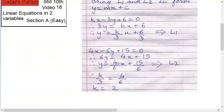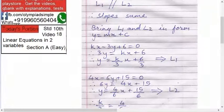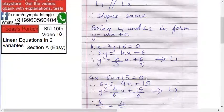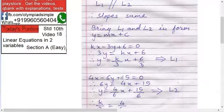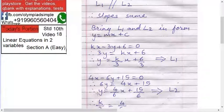Now the other line, 4x minus 6y plus 15 equals 0. Therefore 6y equals 4x plus 15, 6y on this side. y equals 4 upon 6 times x plus 15 by 6.